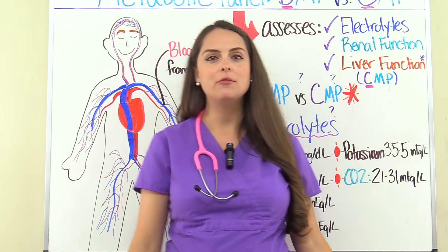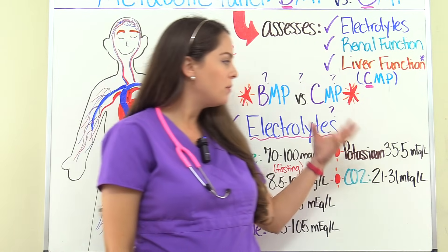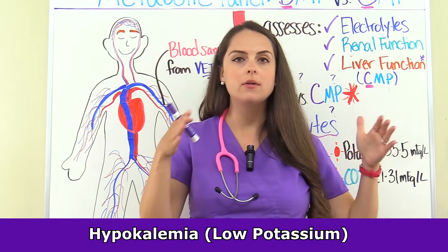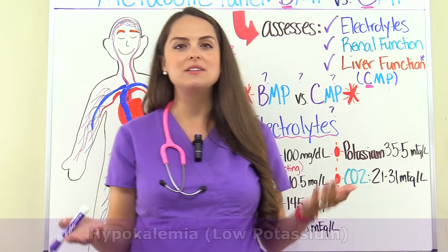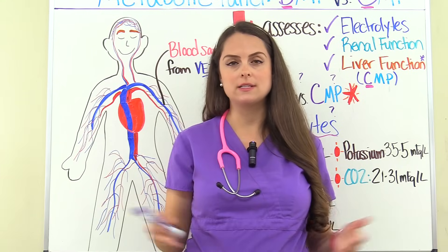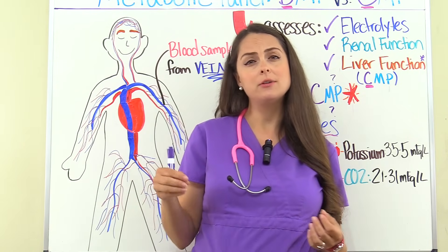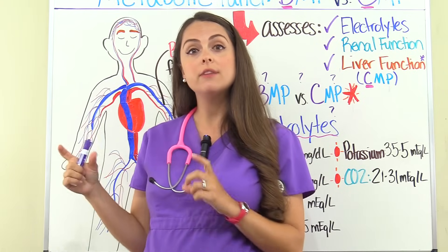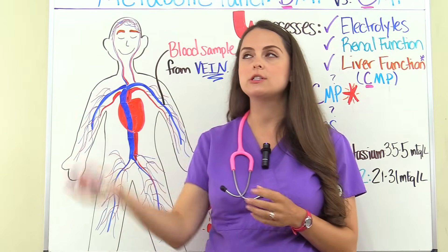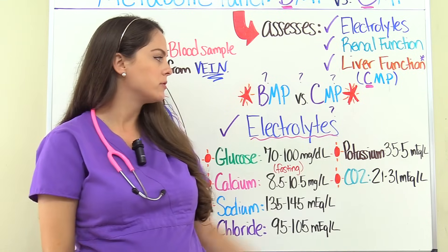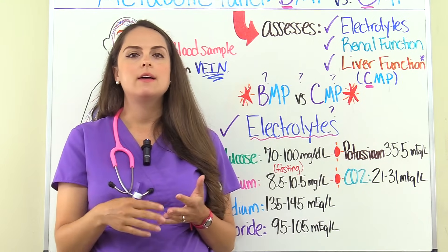A low potassium level, anything less than 3.5, is considered hypokalemia. What can lower it? Loop diuretics cause the body to waste potassium. Corticosteroids can do that too. Disease processes like Cushing syndrome also contribute — with Cushing syndrome, high production of aldosterone tells the kidneys to excrete potassium, so you lose it in your urine, which drops it in the blood. Plus, if your patient is having a lot of fluid loss rich in potassium — like diarrhea or vomiting — that can lower potassium as well.